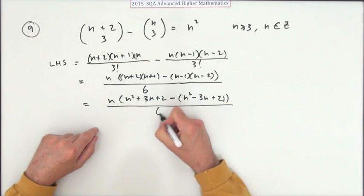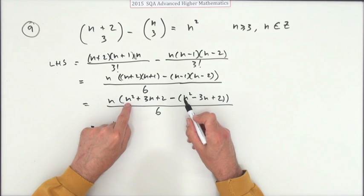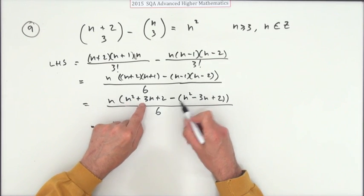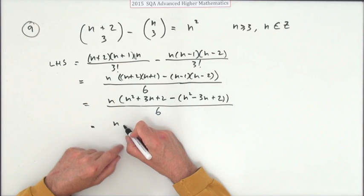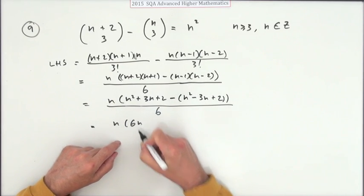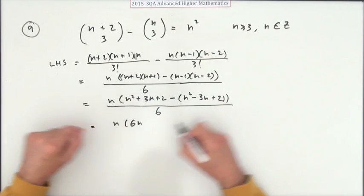All over 6. So it's n times, now n squared minus n squared disappears. 3 take away negative 3 is 6n. And 2 take away 2 disappears.